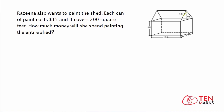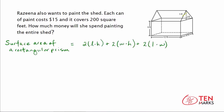For the rectangular prism, surface area is found by using the dimensions of each face and multiplying by 2. For the length times height faces: the height is 9 feet and the length is 12 feet, so 2 times 12 times 9 equals 216 feet squared. This covers the front wall and the back wall of the shed directly opposite it.